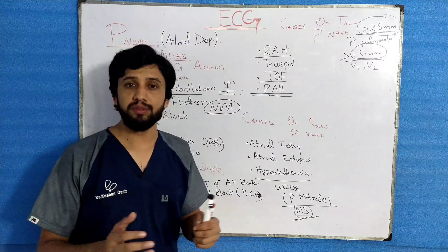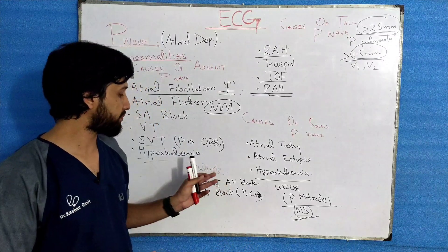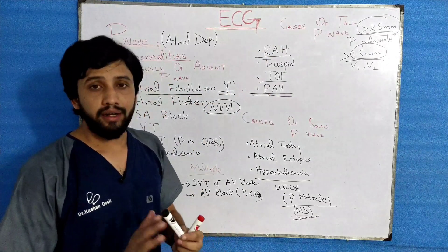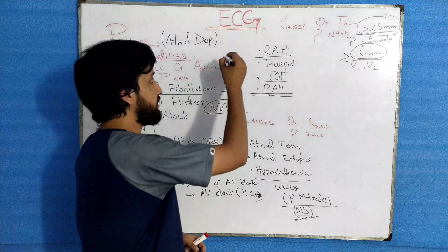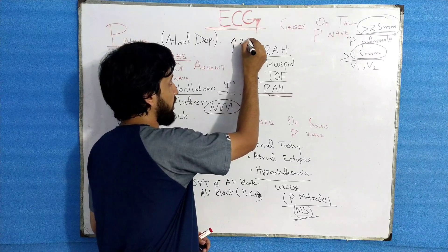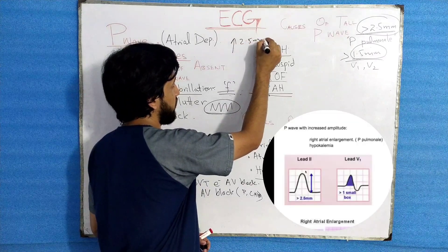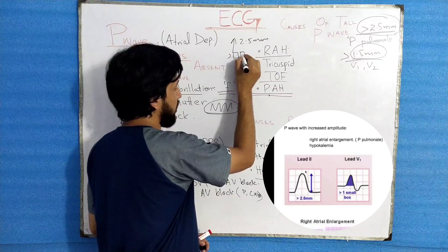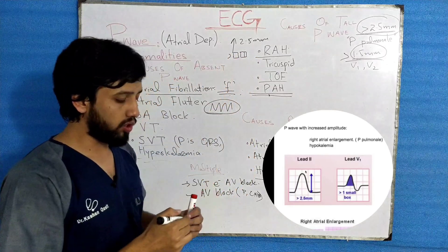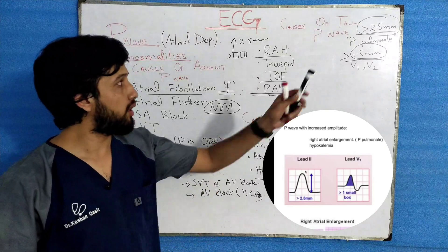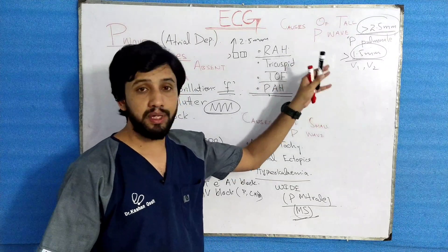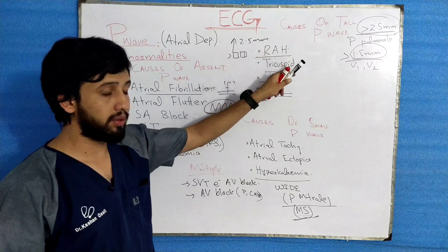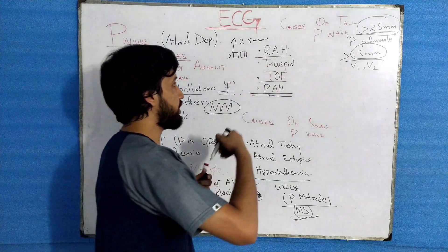Then comes the tall P wave. When the amplitude of the P wave is greater than 2.5 mm, or greater than 2.5 small square boxes, we call it P pulmonale. P pulmonale is seen in conditions like right atrial hypertrophy and tricuspid stenosis.